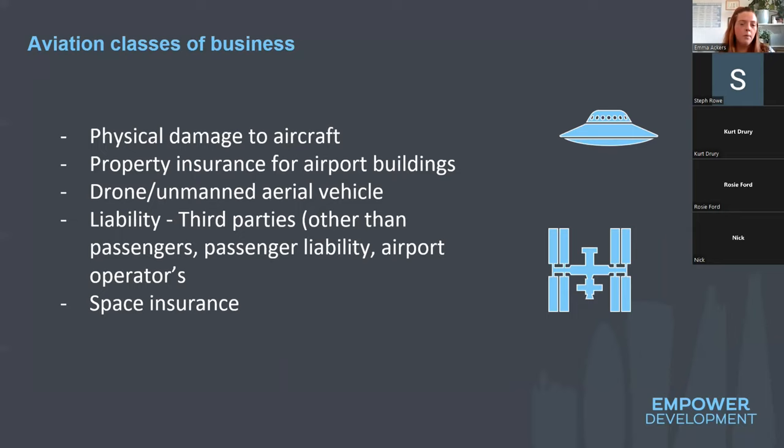We also have aviation classes of business. For aviation we're looking at cover for physical damage to the aircraft, property insurance for airports and buildings, and drones and unmanned aerial vehicles coming under aviation liability for third parties. Space insurance also comes under aviation.